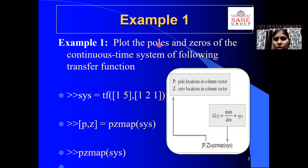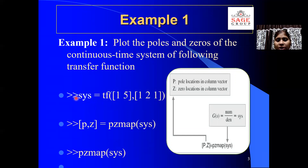Here is the example: plot the poles and zeros of a continuous time system for the following transfer function. The command for writing a transfer function in MATLAB was already discussed in experiments three and four. So here, SYS is taken as the variable for the transfer function. I'm writing SYS = TF(...), where TF is the command for the transfer function. Within the parentheses and square brackets, write the numerator polynomial coefficients, then a comma, then the denominator polynomial coefficients.